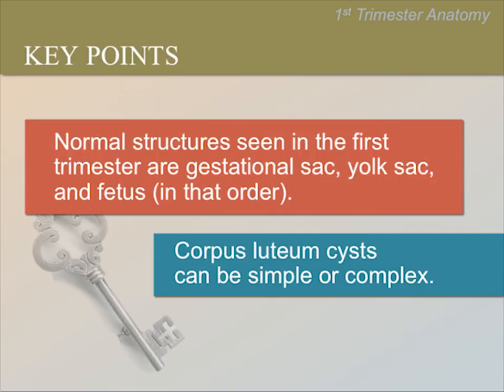Let's review the key points. Normal structures seen in the first trimester are the gestational sac, yolk sac, and fetus, in that order. Corpus luteum cysts can be simple or complex. In the next lesson, we will learn how to measure the gestational sac or the fetus to very accurately date the fetus and determine the due date.